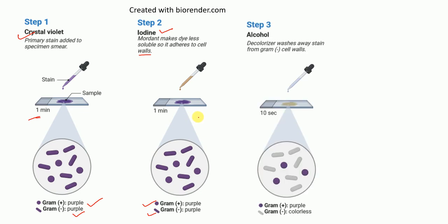In the third step, the decolorizing agent such as alcohol is added. Alcohol washes away the stain only from gram negative bacteria, not from gram positive bacteria. Alcohol washes away the stain only from gram negative cell walls, not from gram positive cell walls.